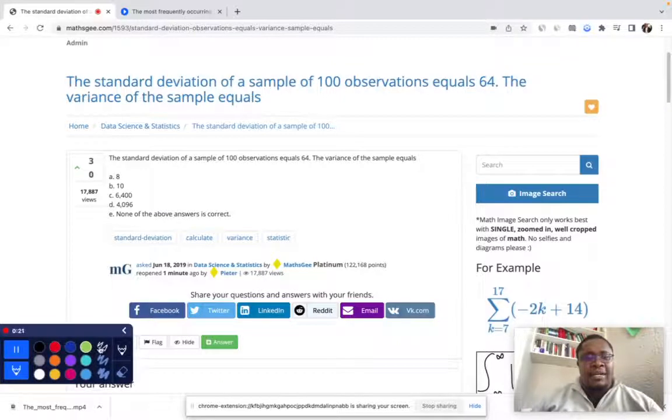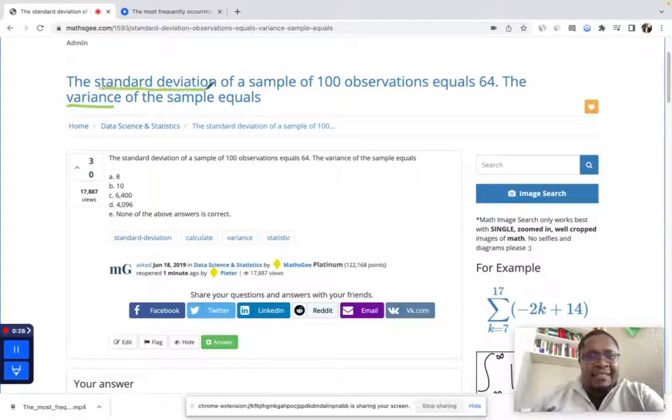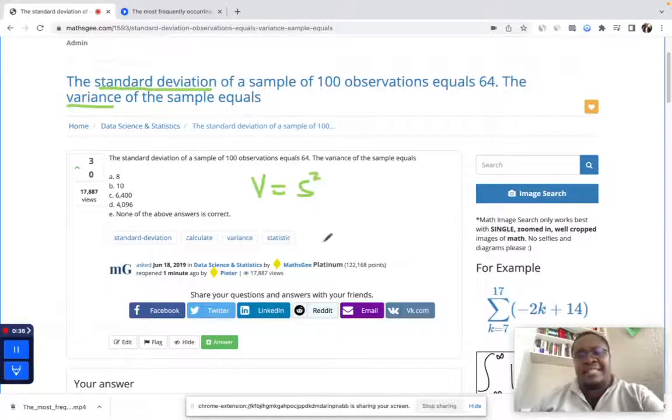All we have to acknowledge is the relationship between variance and standard deviation. We know that the variance is equal to the standard deviation squared.